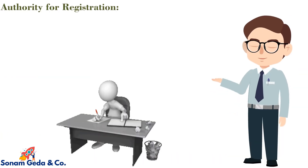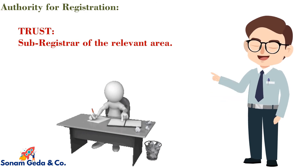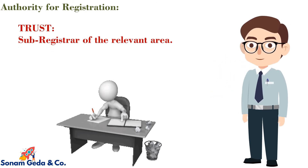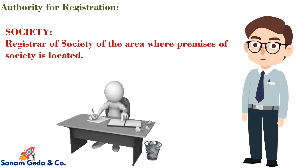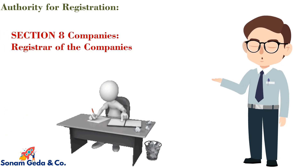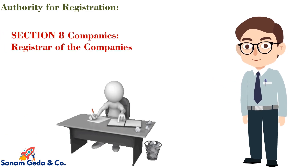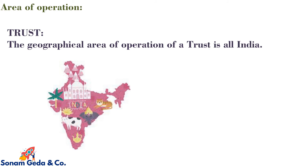Authority for registration: in the case of a Trust it is the Sub-Registrar of the relevant area. For a Society it is the Registrar of Societies of the area where the premises of the society is located. For Section 8 Companies it is the Registrar of Companies.